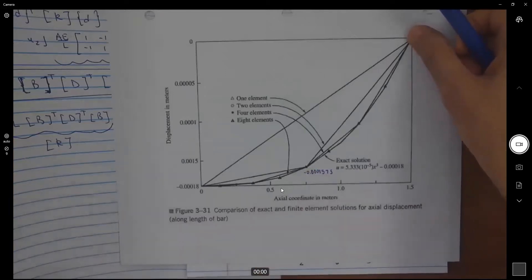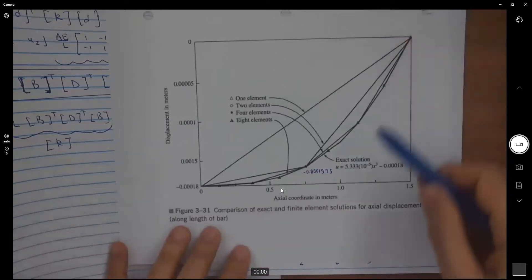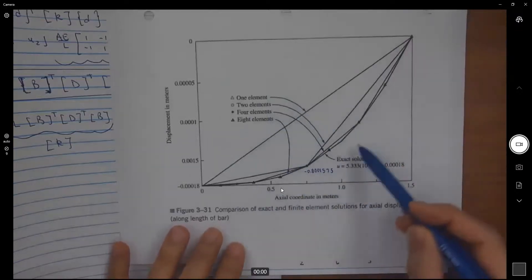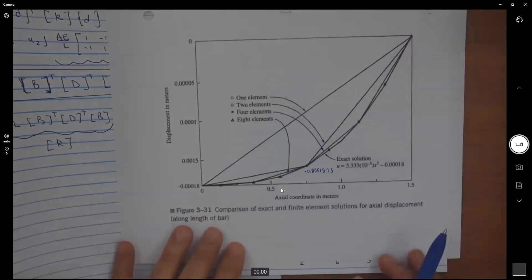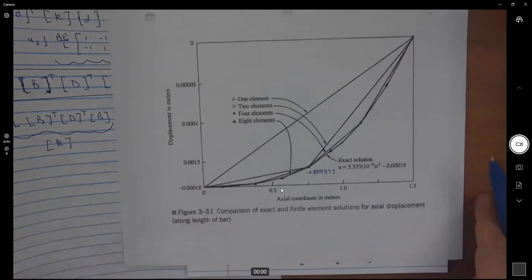If we continue to refine the mesh to use four elements and eight elements, we keep getting closer to the curve. So we are getting closer to the exact solution.